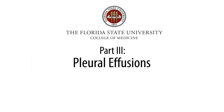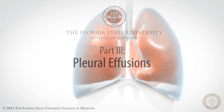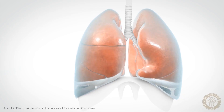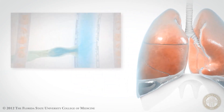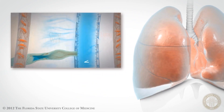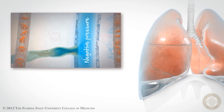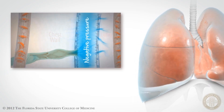We've gone over normal pleural fluid mechanics. When you have too much fluid, it's called a pleural effusion. What mechanics are broken when there's a pleural effusion? The thin film of fluid between the parietal and visceral pleural surfaces creates a partial vacuum of negative pressure, which forces the surfaces of the pleura to cling to one another.